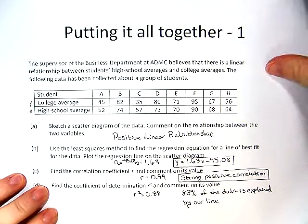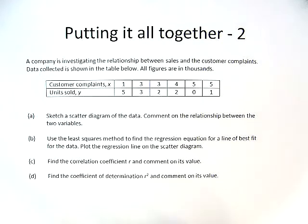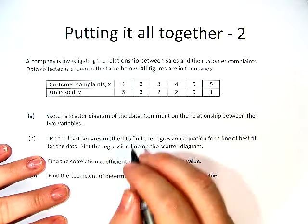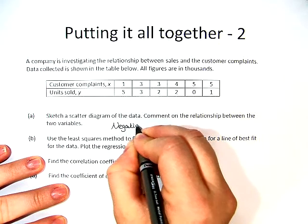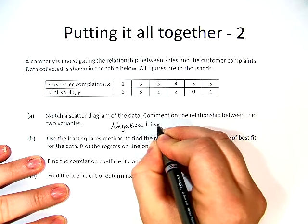So let's go ahead and try another one. We've already sketched a scatter diagram and we've found a negative linear relationship.